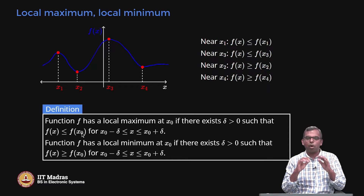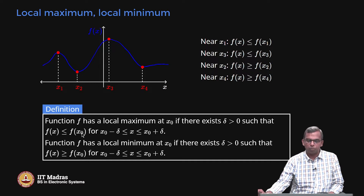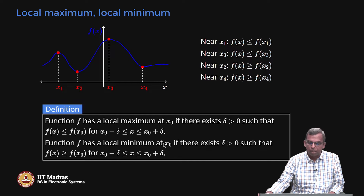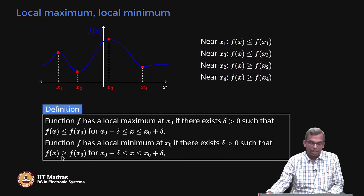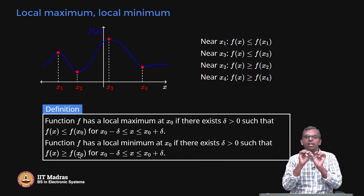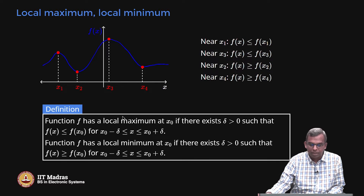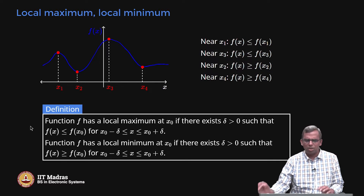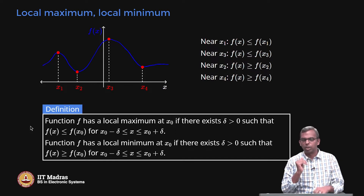Why must there exist some delta greater than 0? Delta could be smaller and smaller — as long as it is non-zero, even 0.0000001 — it does not matter how small it is. As long as there is an interval around x₀ where f(x) is always less than or equal to f(x₀), we say x₀ is a local maximum. The same device is used for local minimum: if f(x) ≥ f(x₀) over some tiny interval, it is a local minimum.